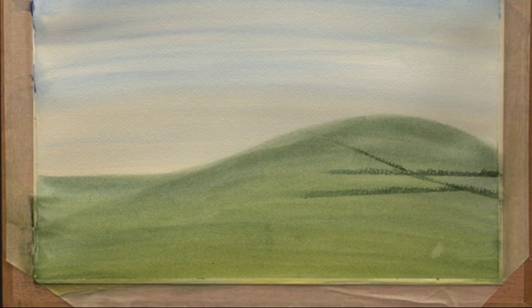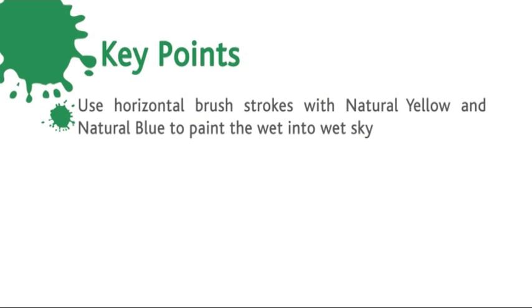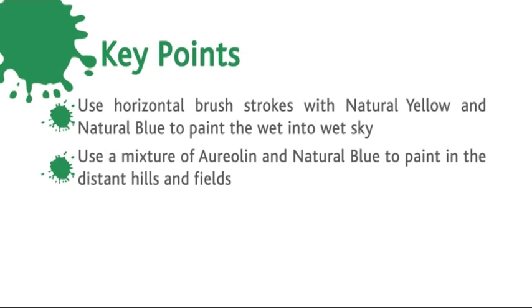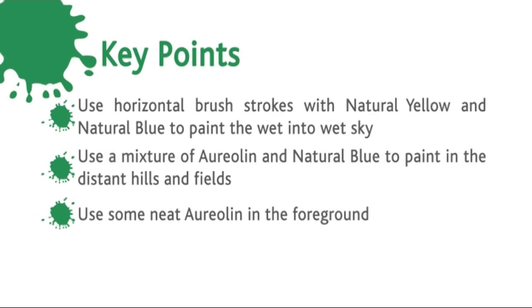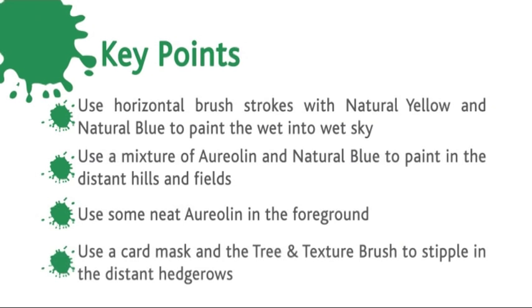So let's have a quick recap of this stage. Use horizontal brush strokes with natural yellow and natural blue at the top to paint the wet into wet sky. Use a mixture of aureolin and natural blue to paint in the distant hills and fields. Use some neat aureolin in the foreground. Once dry, use a card mask and the tree and texture brush to stipple in the distant hedgerows.